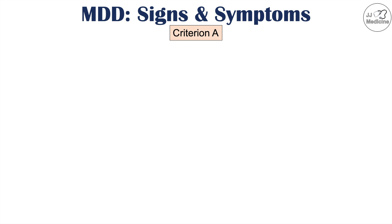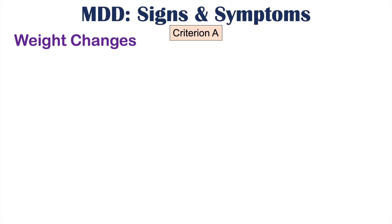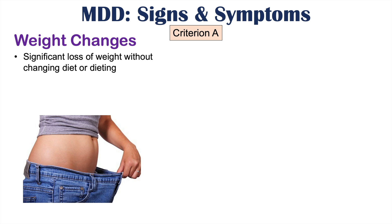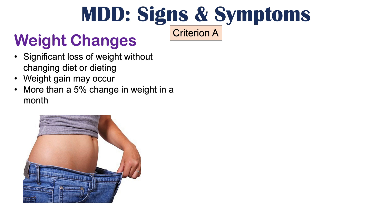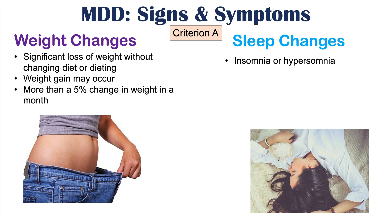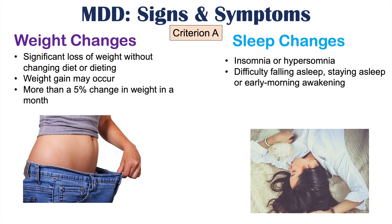There are more signs and symptoms within Criterion A. Weight changes can occur — either significant loss of weight without dieting, or weight gain — defined as a change of more than 5% of body weight in a month. Sleep changes can also occur, including either insomnia or hypersomnia. Insomnia involves difficulty falling asleep, staying asleep, or early morning awakening, while hypersomnia means sleeping much more than usual.